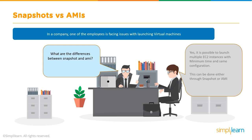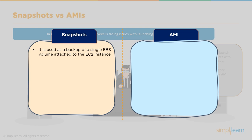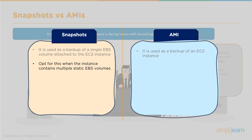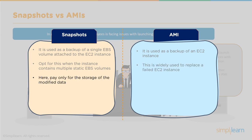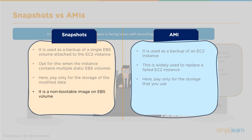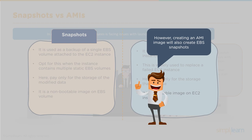A snapshot is a backup of a single EBS volume — like a virtual hard drive attached to an EC2 instance. It is used when an instance contains multiple static EBS volumes, and you pay only for the storage of modified data. Snapshots are non-bootable images. An AMI is a backup of an entire EC2 instance, widely used to replace failed instances. With AMI you pay only for the storage you use, and AMIs are bootable images. Creating an AMI also creates EBS snapshots.